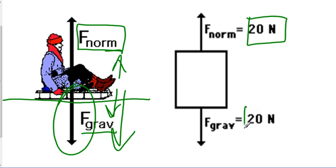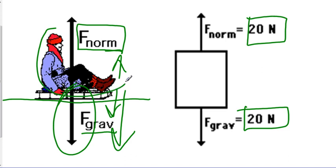If you are not accelerating up or down, the gravitational force and the normal force are equal. For this example, both are 20 newtons. If these forces were different, you would be accelerating in one direction or the other. Since both are equal, we are in equilibrium — not accelerating in any direction, which could mean we're moving at a constant velocity.